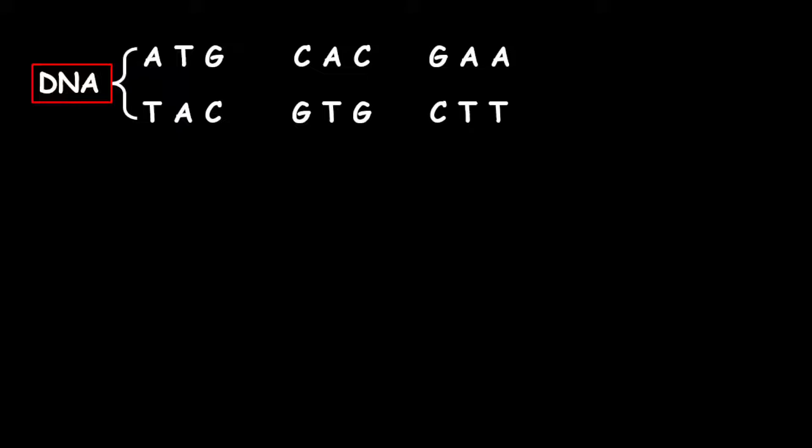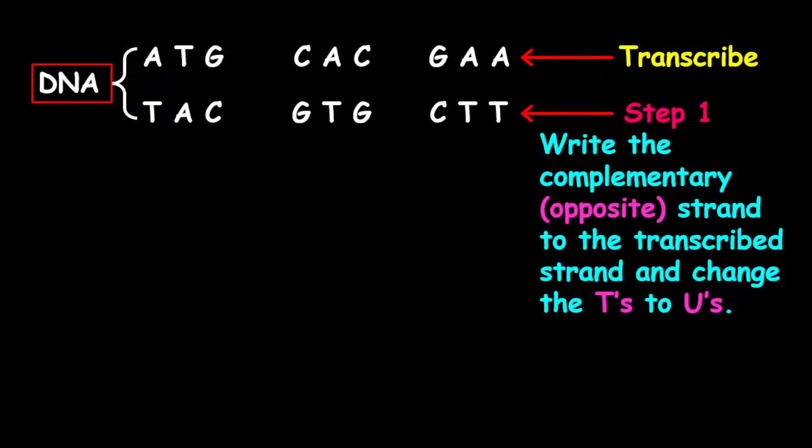Let's say, for example, we're going to transcribe the top strand, and transcription actually means to copy. Now, the first step to do here is to write the complementary or the opposite strand to this transcribed strand and change the T's into U's.